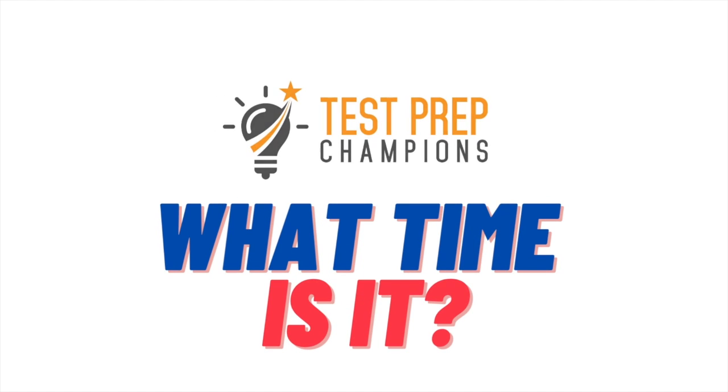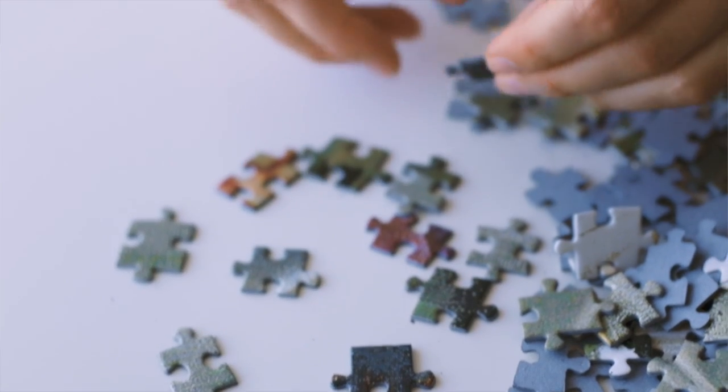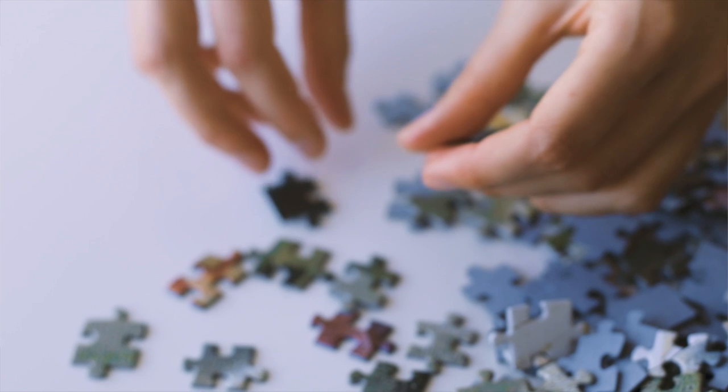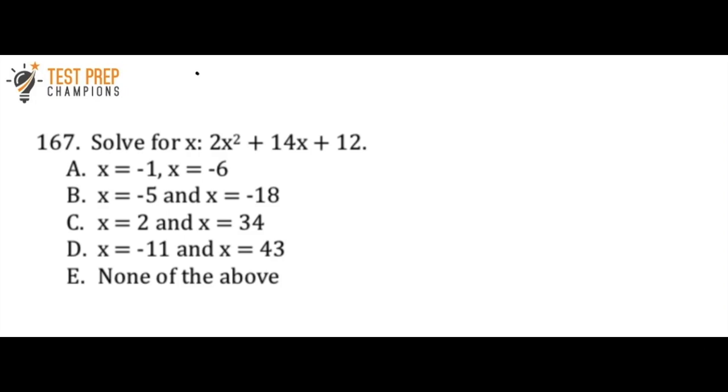This next question is the hardest question in the video in my opinion. You can let me know down below if you think that there was a harder question, or if you think this was the hardest. I'll let you try it now. Solve for x: 2x squared plus 14x plus 12. So now's your chance to pause the video, try to figure this out, and whenever you're ready we'll go over this, and if you get stuck don't worry about it because we're just going to go over the answer.